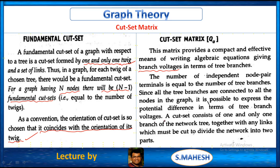It is possible to express the potential difference in terms of tree branch voltages. For example, if you consider two nodes with voltages V1 and V2, if V1 is not equal to V2, there is a potential difference between those two nodes. A cut set consists of one and only one branch of the network tree together with any links which must be cut to divide the network into two parts.